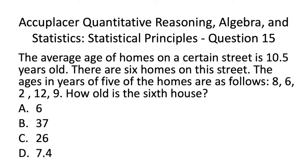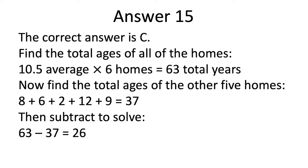Finally, let's have a look at Acuplacer QAS Statistics Practice Test Question 15. The correct answer is C. Find the total ages of all the homes: we had an average of 10.5 and we know there are 6 homes, so all of the years together equal a total of 63 years. Now find the total ages of the other 5 homes — add the ages of these 5 homes to get a total of 37. Then subtract 37 from 63 to get the age of the 6th home: 63 minus 37 equals 26 years old.